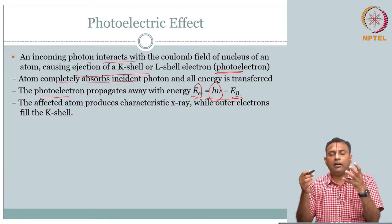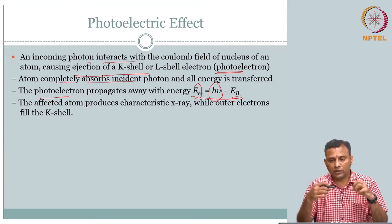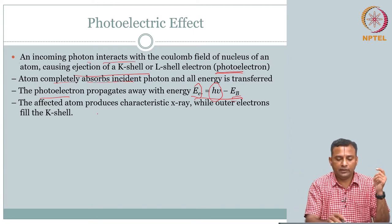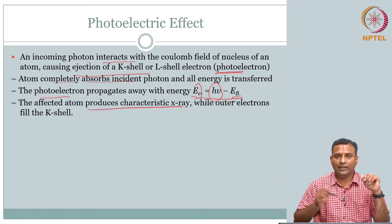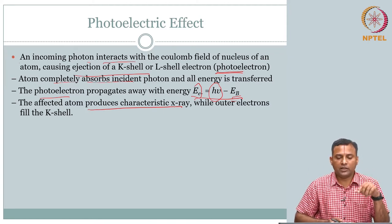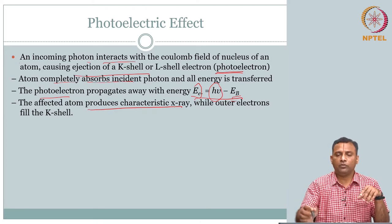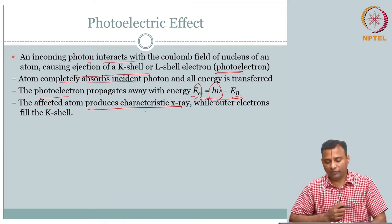After the affected atom tries to return to its ground state, it releases energy in the X-ray range — characteristic X-ray — depending on which shell is migrating in the rearrangement. So you have both the photoelectron, which can cause subsequent interactions, and the characteristic X-ray, which can also interact further.